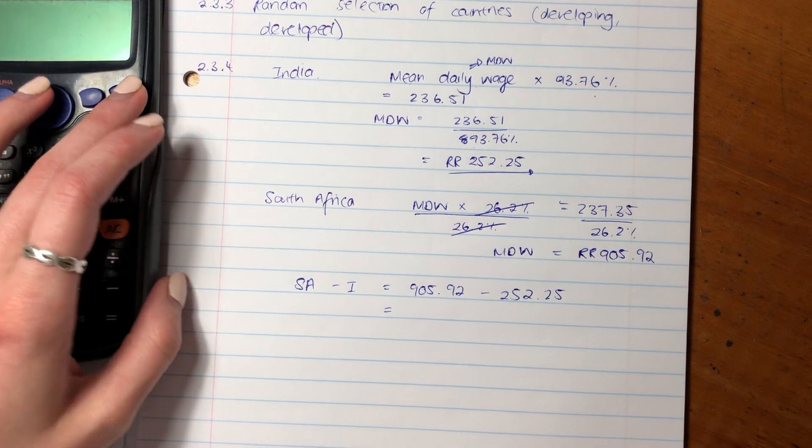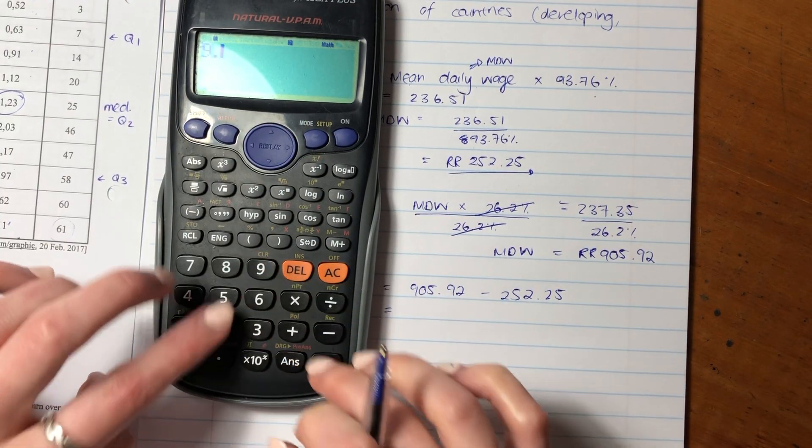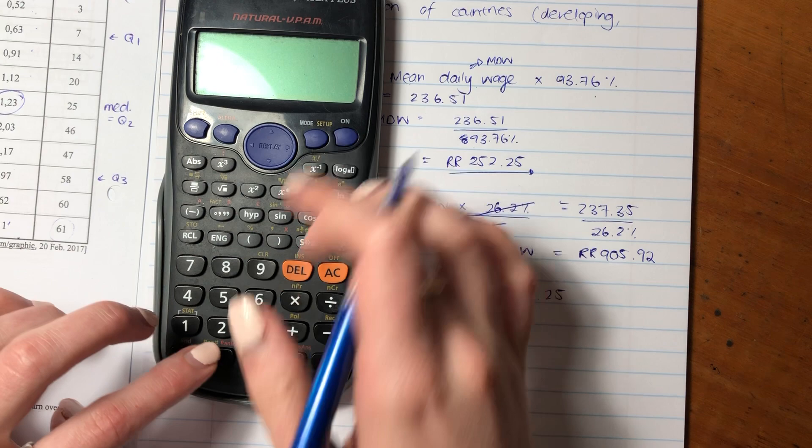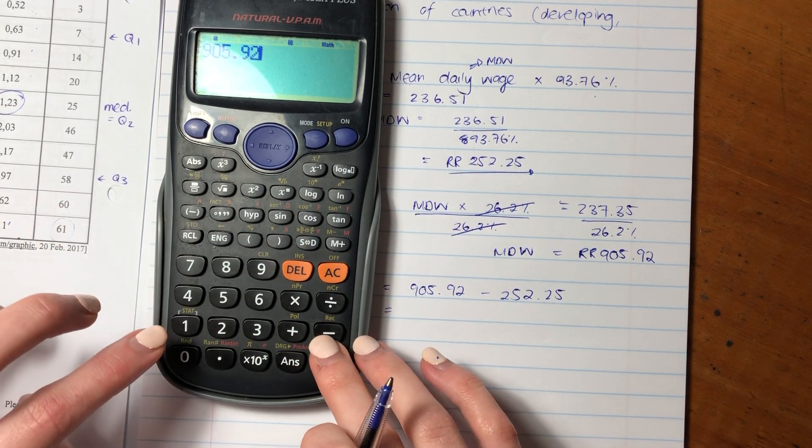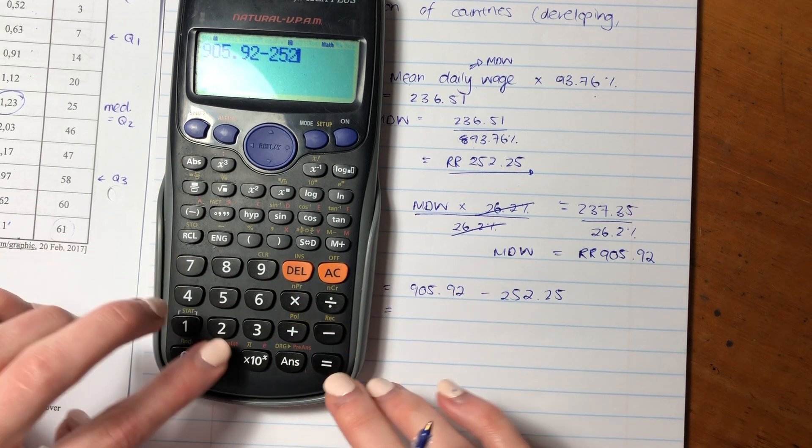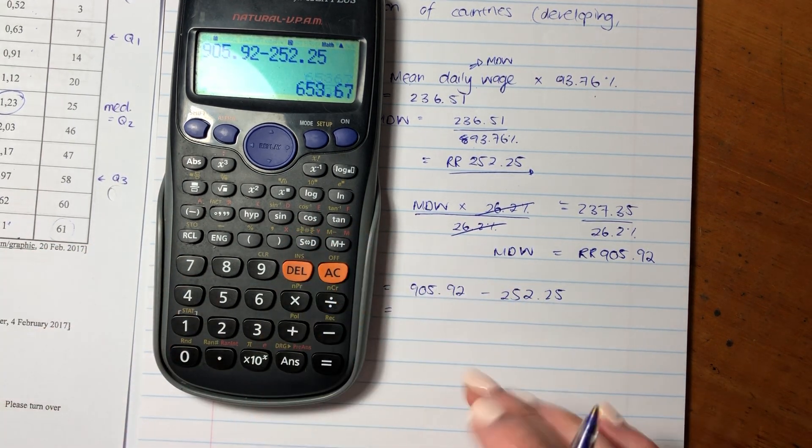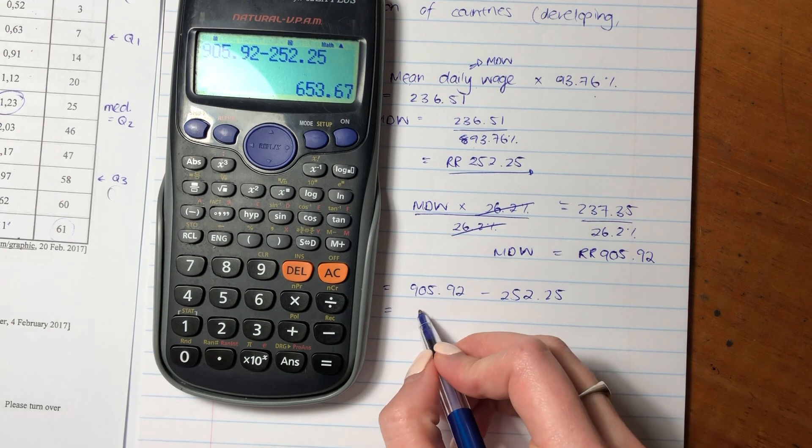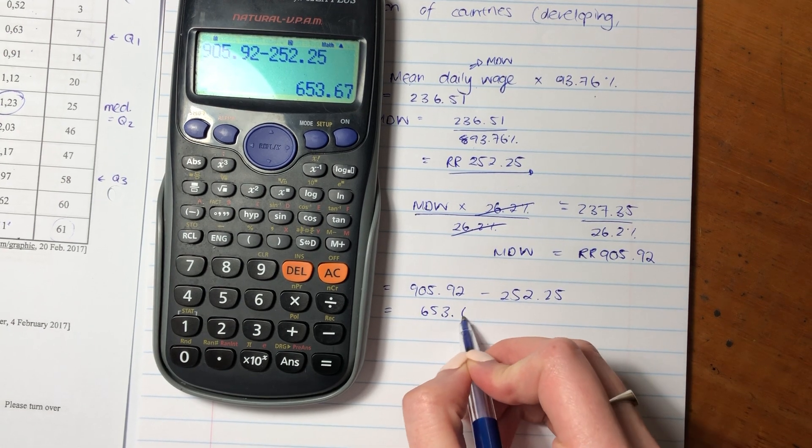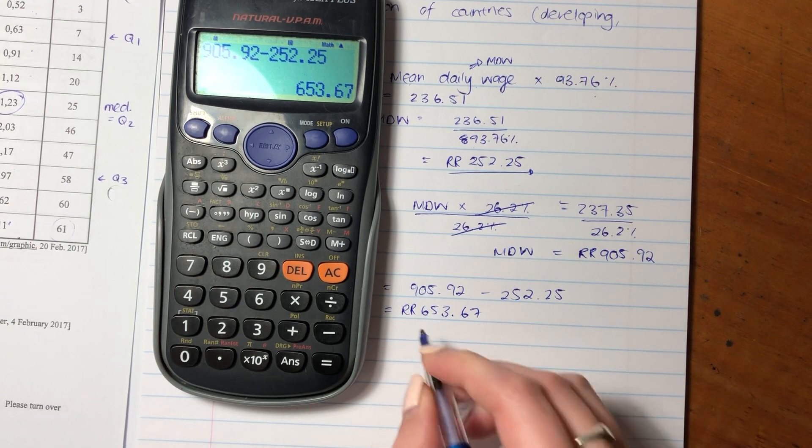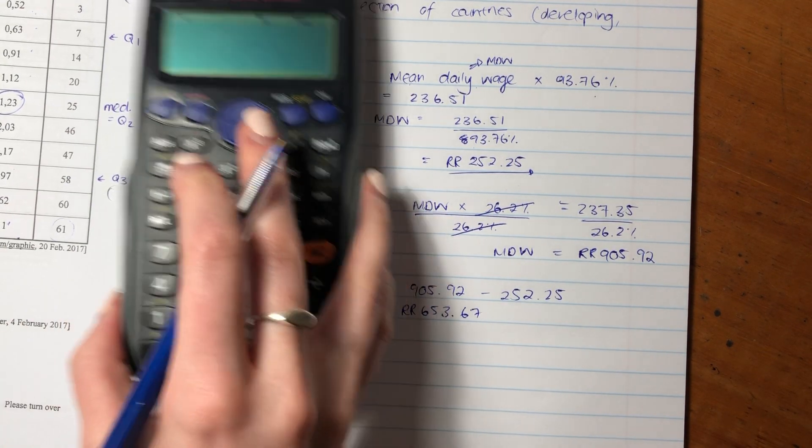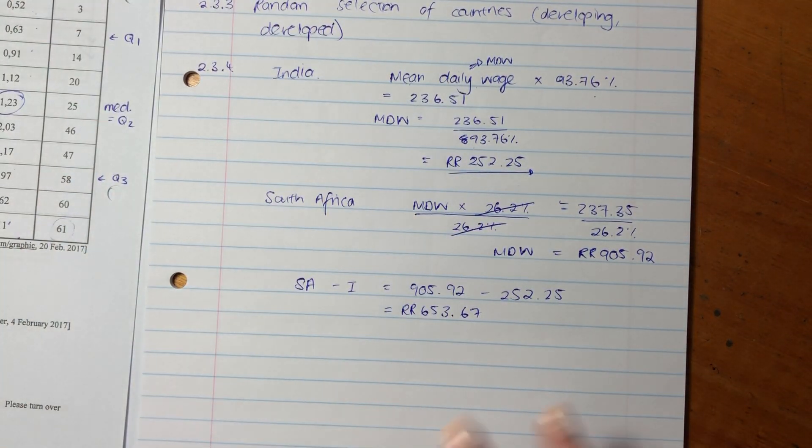So now we've got that, but have we answered the question? What did the question say? It's the difference between the mean daily wage. So the difference between the mean daily wage is going to be South Africa minus India, which is 905.92 minus 252.25, because that's going to be the difference. Put that into your calculator. And what is the difference? It is 653.67 Russian ruble. You probably should write out Russian ruble, not just RR, because I don't think that's the official symbolism to use.